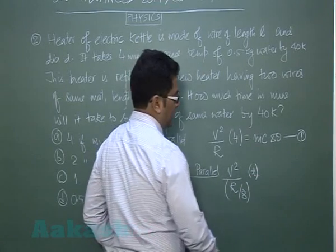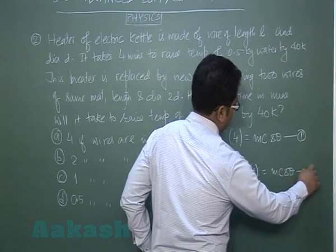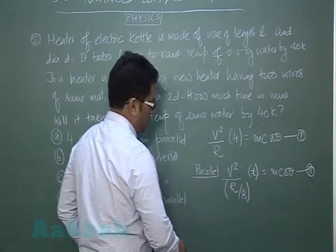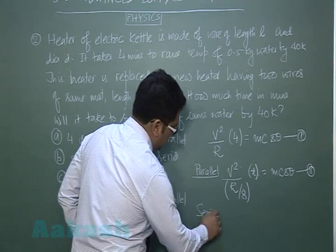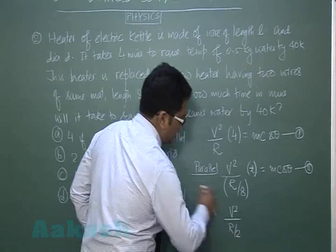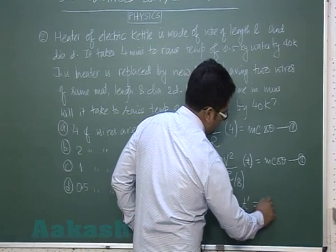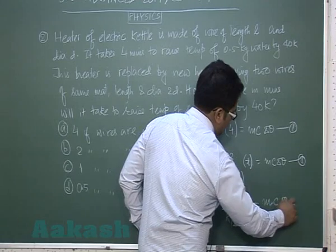And the time is T, and that will equal m c delta theta, that's equation number two. If they are connected in series, V squared, R by four, R by four in series would be R by two, and the time T dash would equal m c delta theta.